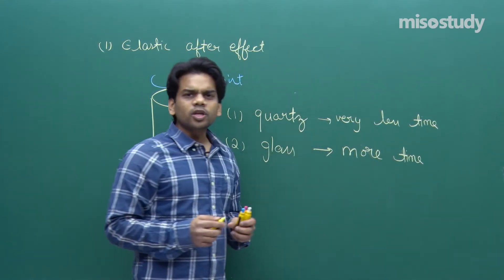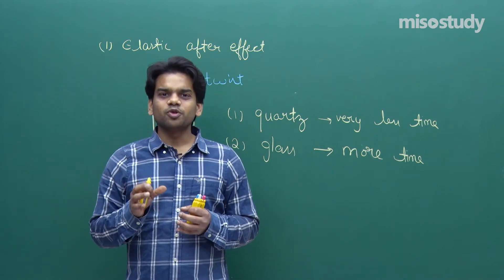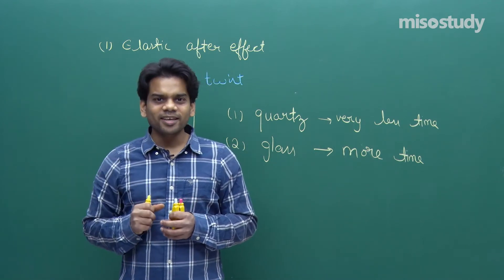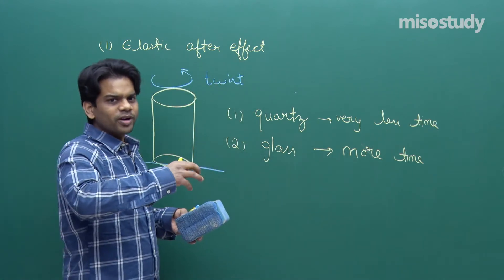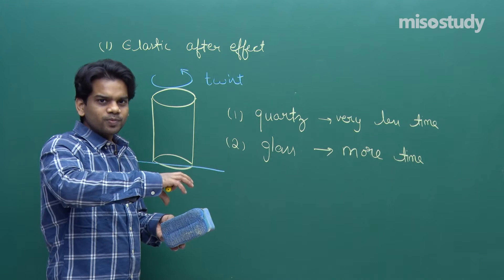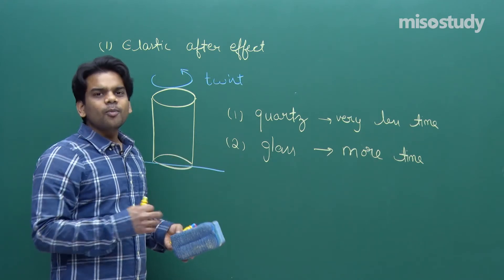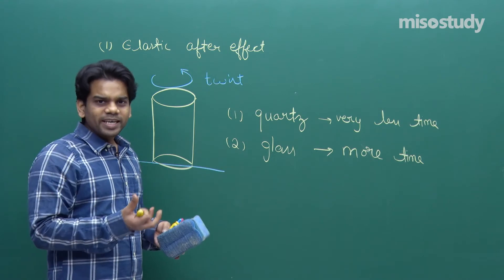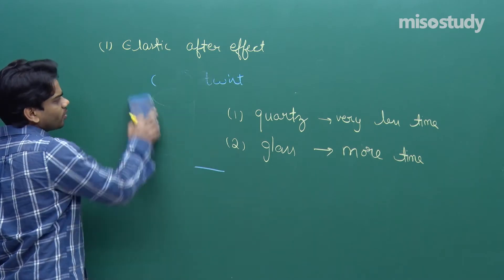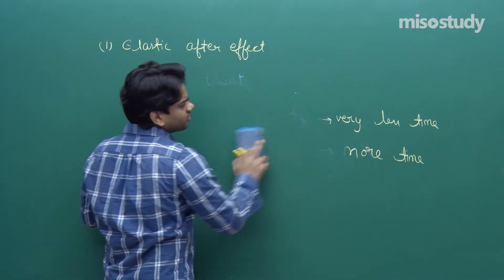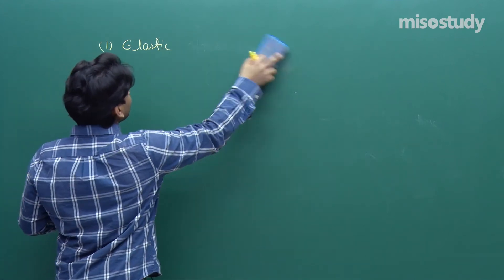Depending upon the requirement, we use materials that quickly regain their original structure. Once a torque is applied causing rotation, upon removal the material has to regain its original structure — that is the elastic after effect. The time taken will be less for some materials and more for others.